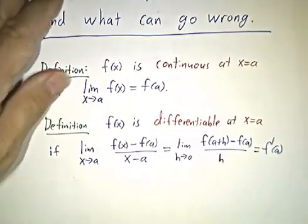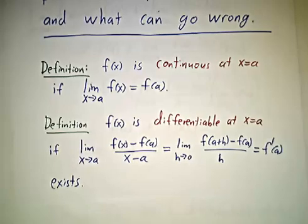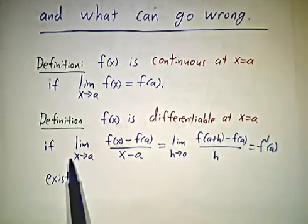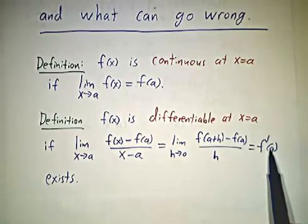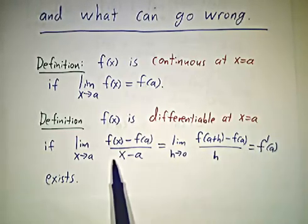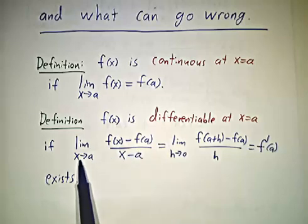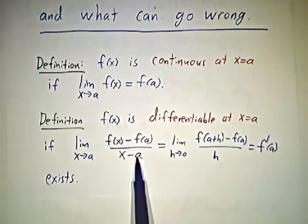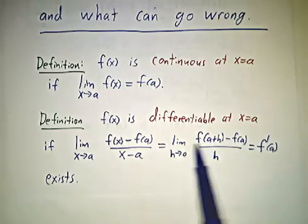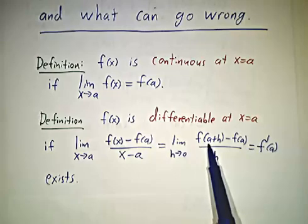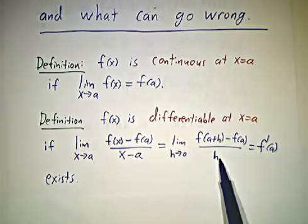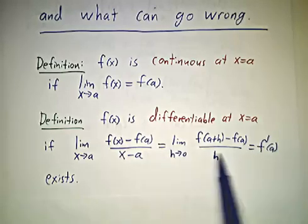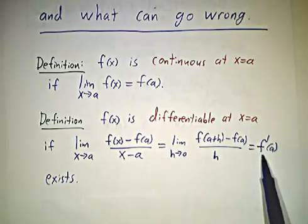In the last video, we learned about the definition of differentiability. A function is differentiable at x equals a if the derivative exists, and the derivative is defined to be a limit. We can think of it as the limit as x approaches a of f of x minus f of a over x minus a, or as the limit as h approaches 0 of f of a plus h minus f of a over h. Either way, those limits are the same thing. If one exists, the other exists, and that's what f prime of a is.